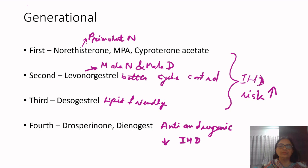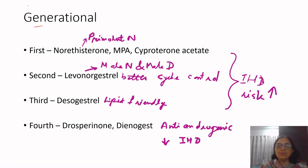The generational classification is mainly dependent on when these progestogens were introduced into the market. The first generation includes norethisterone, medroxyprogesterone acetate (MPA), and cyproterone acetate. Norethisterone, known as Primolut, is one you will be prescribing very frequently.